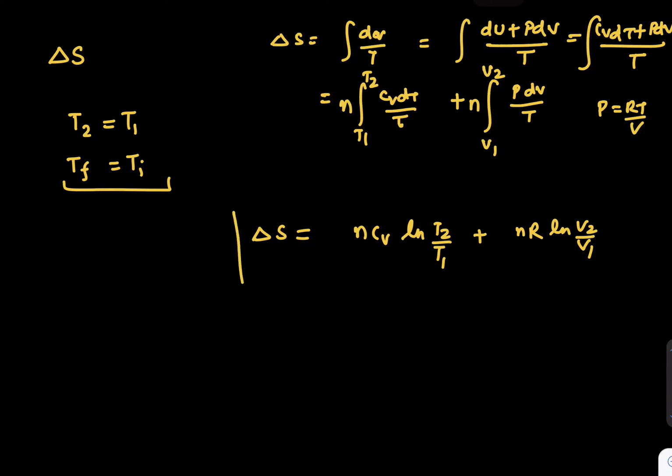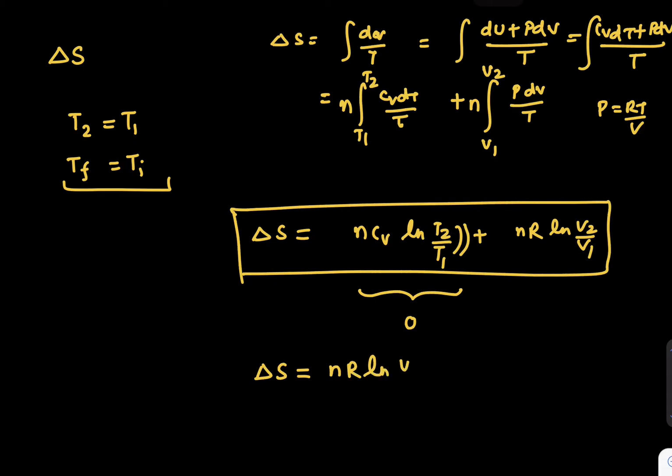So we can revise this. Now if you're solving any isothermal question, you know that T₁ and T₂ are equal, so the first term will definitely be zero. How much is ΔS? Your answer would be n R ln(V₂/V₁). Just look back and check.